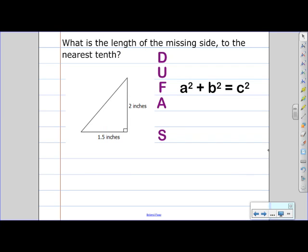Let's take a look at our first question. What is the length of the missing side to the nearest tenth? We have our two legs. We will call the shortest leg A, the longest leg B, and the side that's opposite the right angle, C.